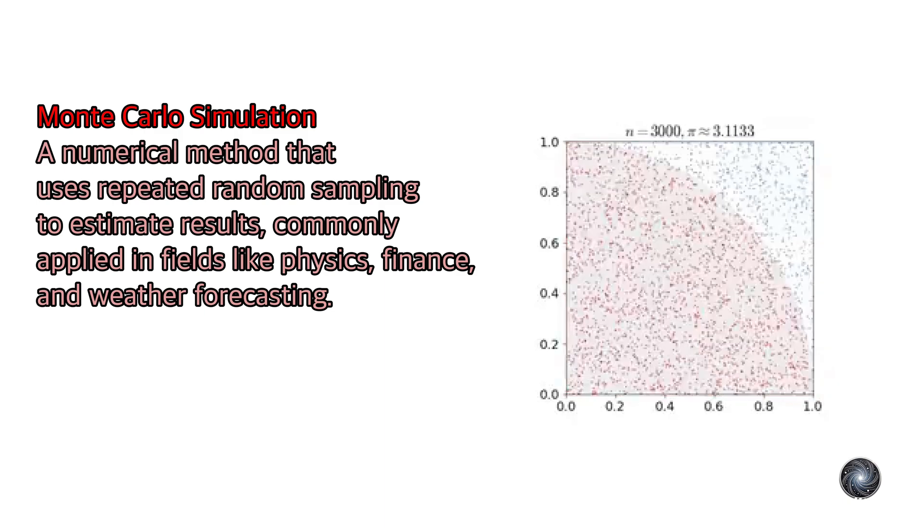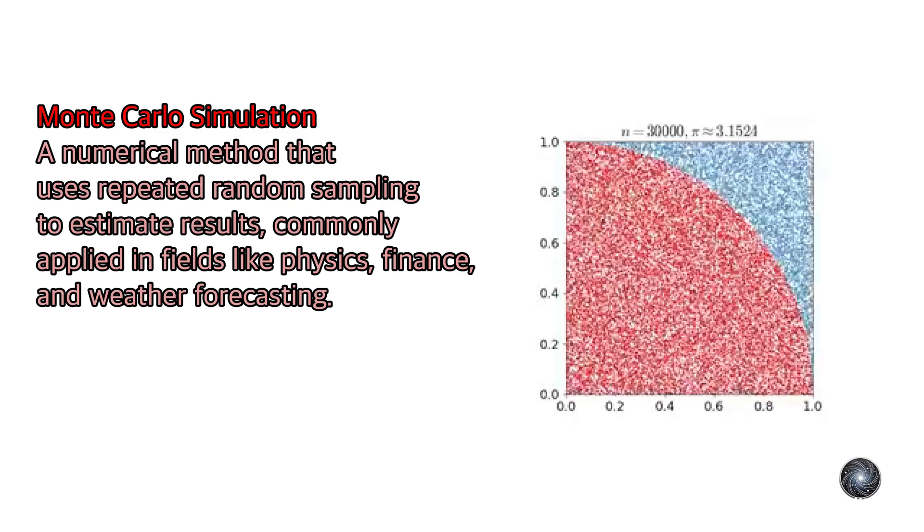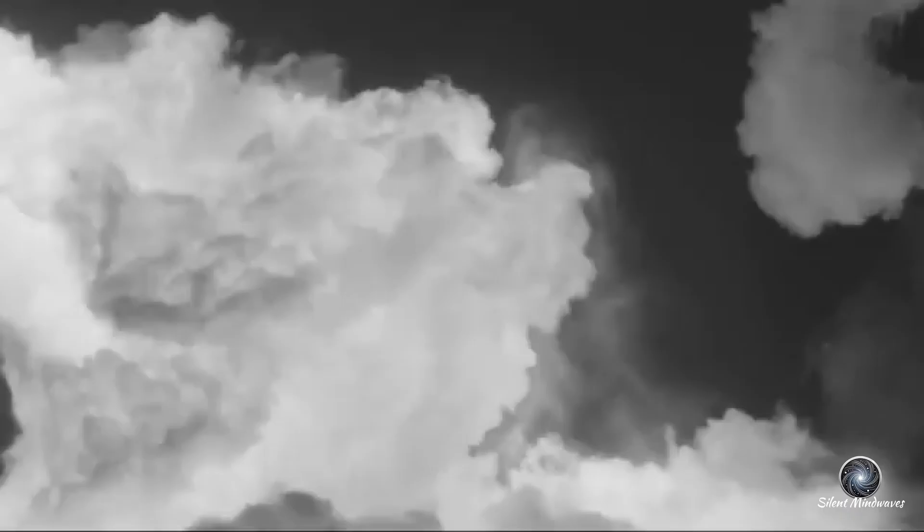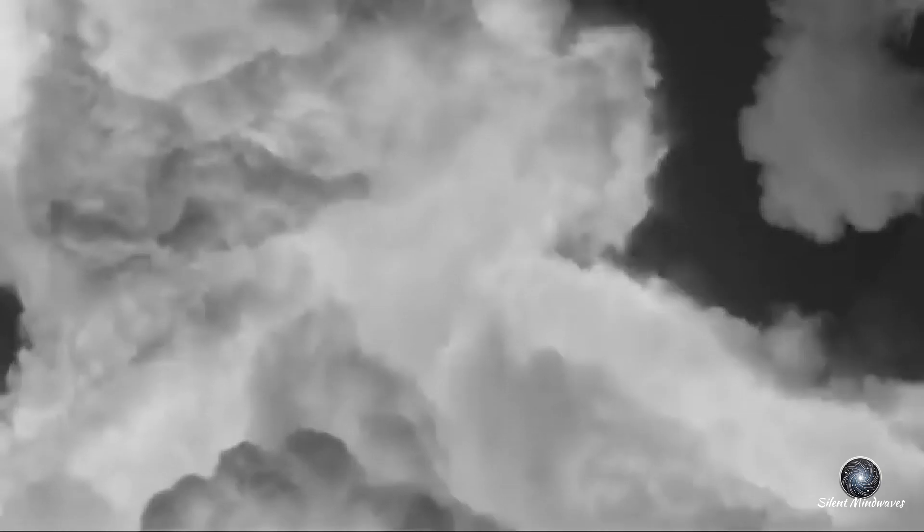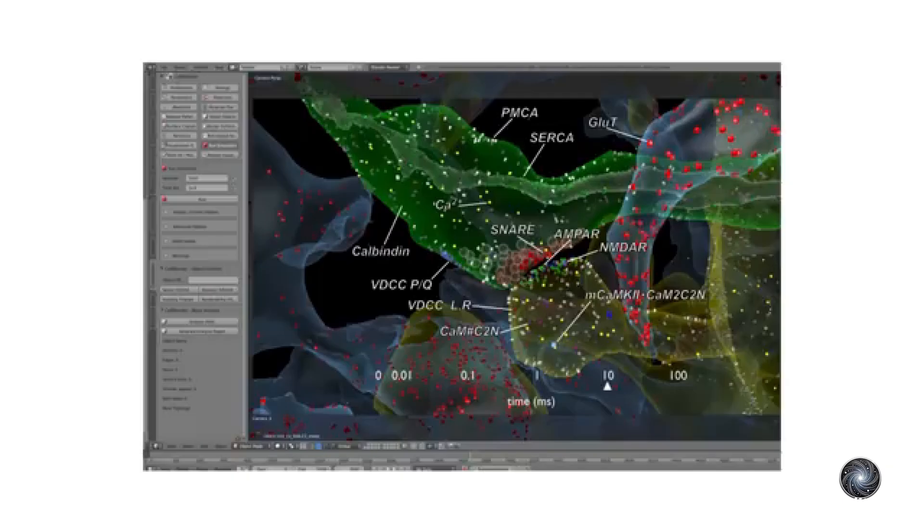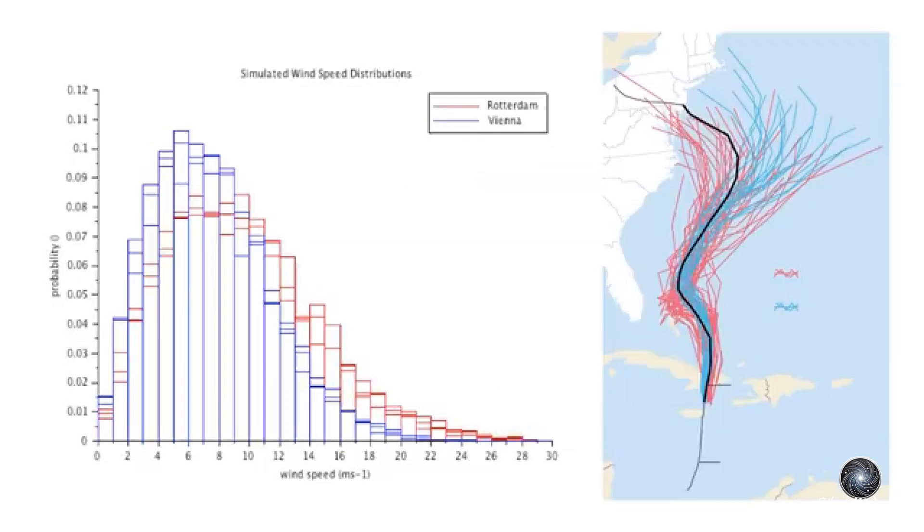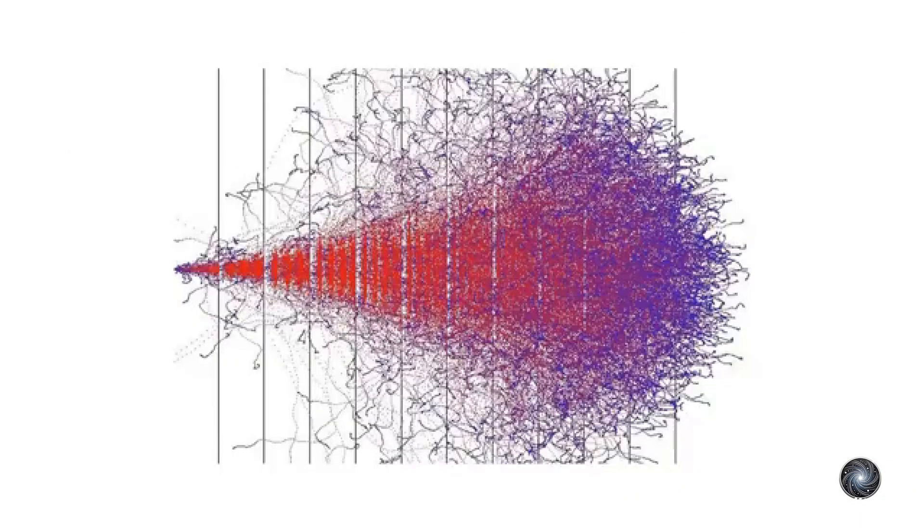From modeling weather patterns to simulating stock markets. Monte Carlo simulations were first developed at the Los Alamos laboratory during the creation of the atomic bomb. They were used to model a shield to protect against neutrons dispersed after the explosion. Today, these methods are widely applied across various fields, including cell simulations, stock market modeling, weather forecasting, and nuclear physics.